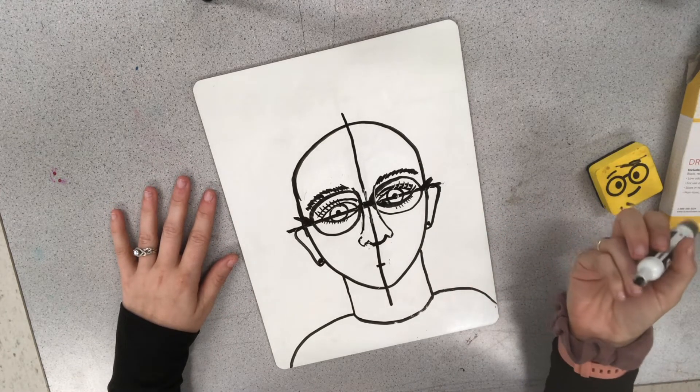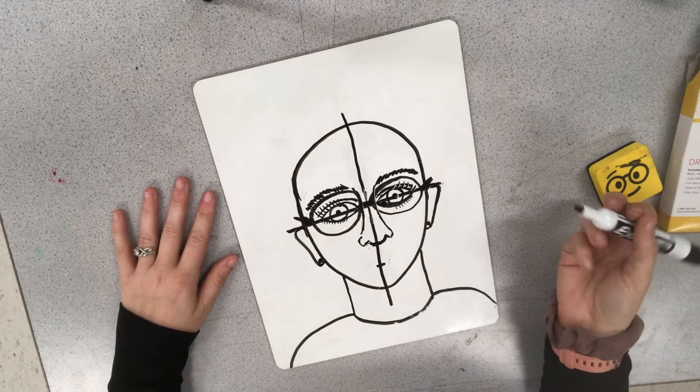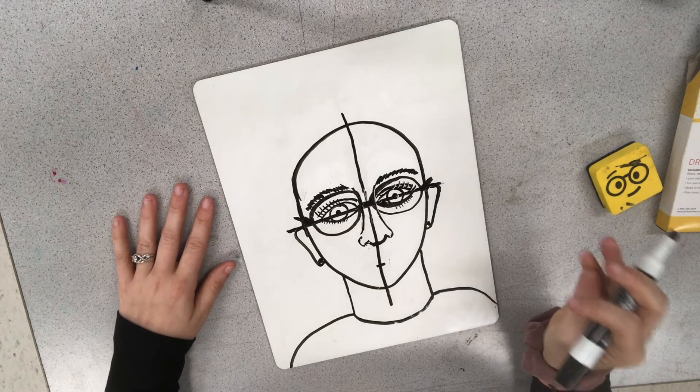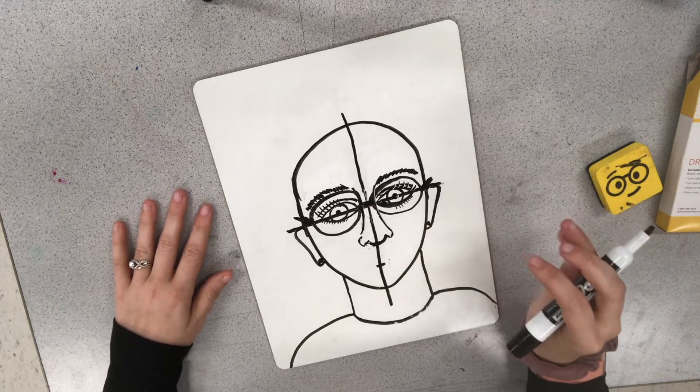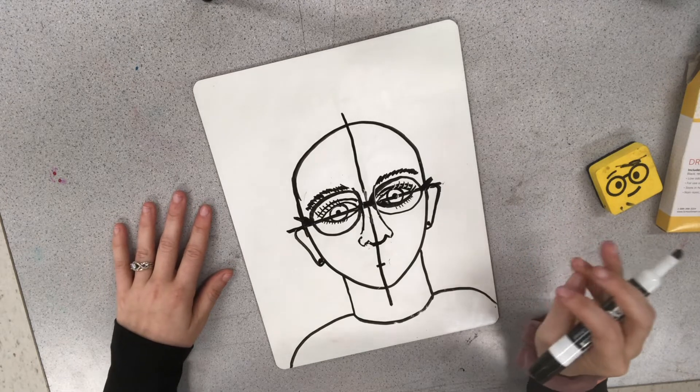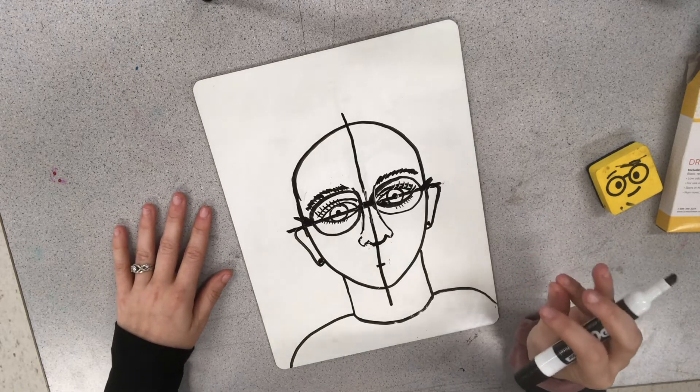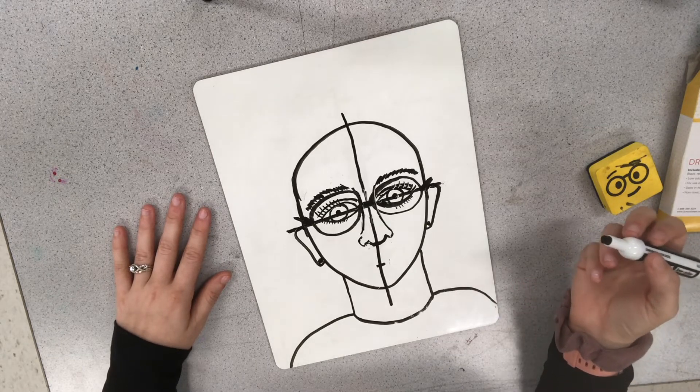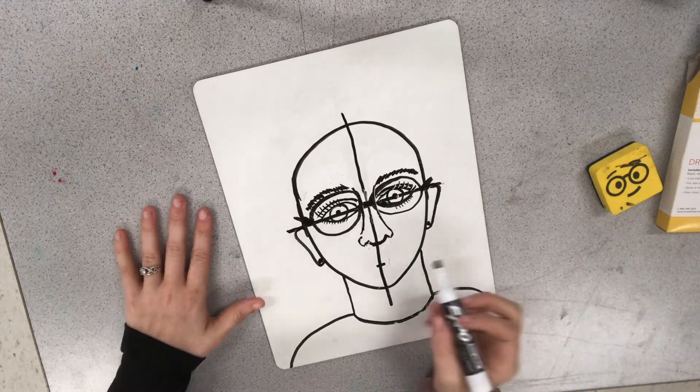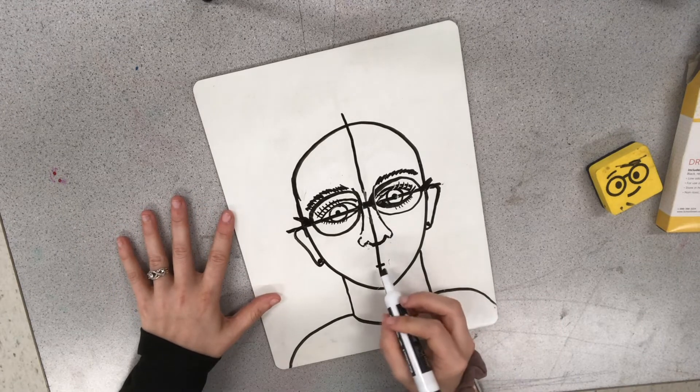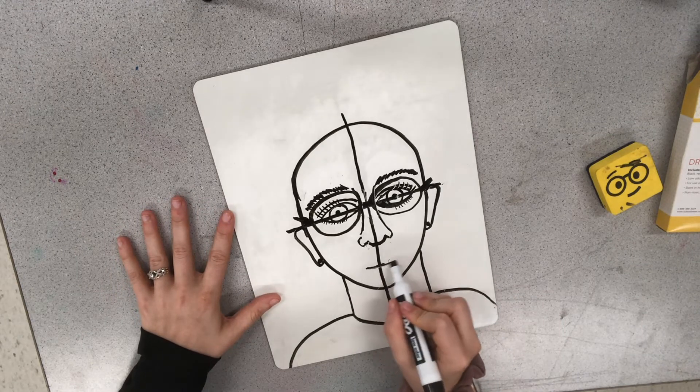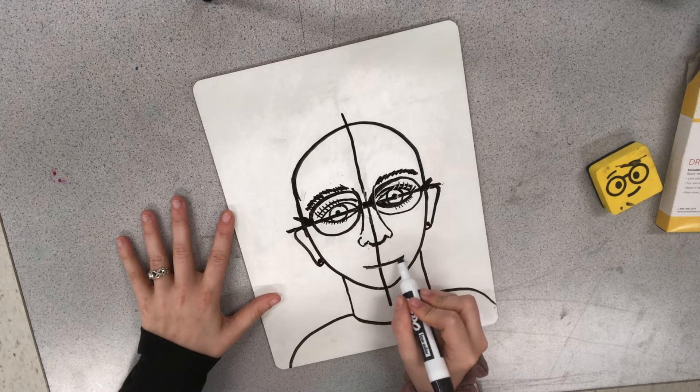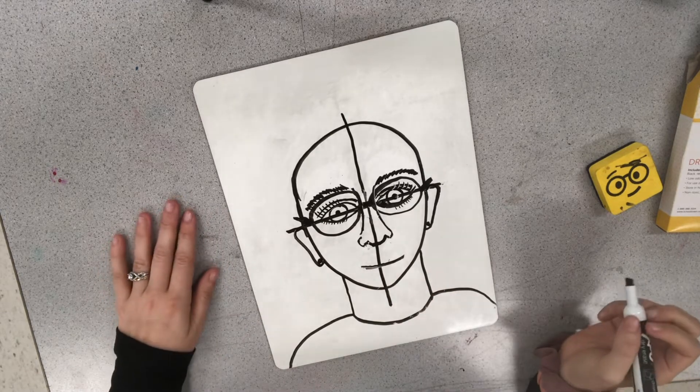Alright, I think we're ready for the mouth now. And the mouth is really expressive, just like how the eyebrows could make the person look angry or surprised or happy. The mouth can do the same. So think about the expression that you're trying to make for your person. For the mouth, there's a couple parts. We're going to start with kind of a soft smile line.